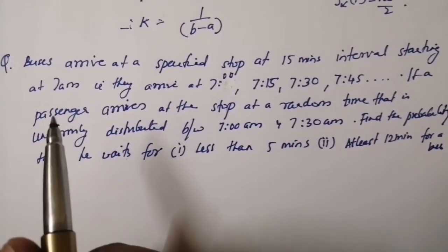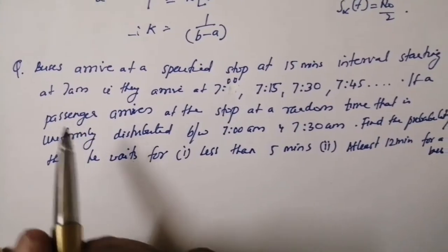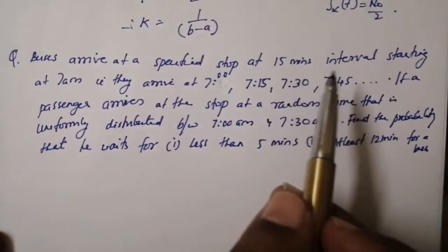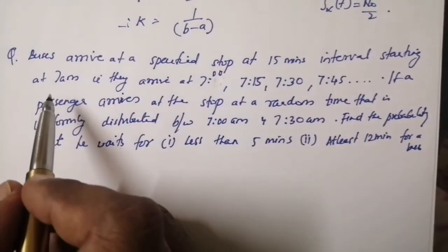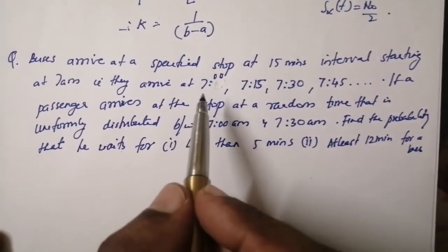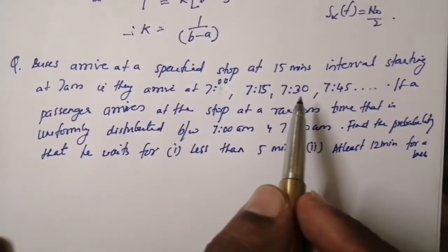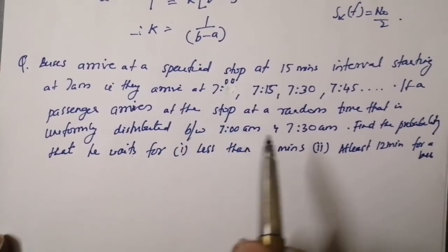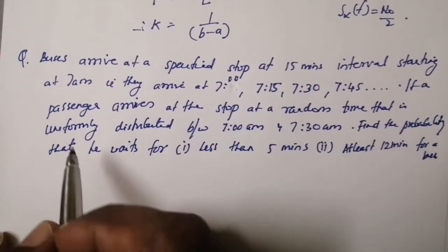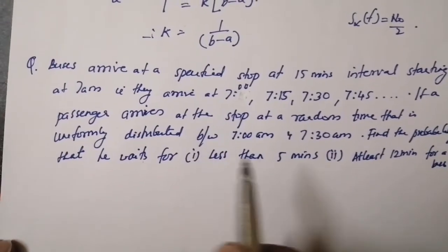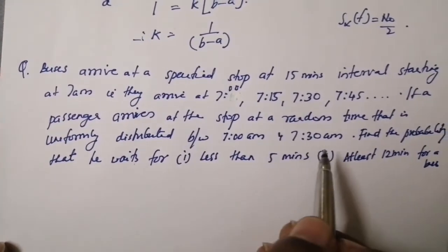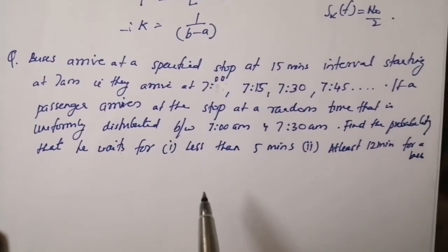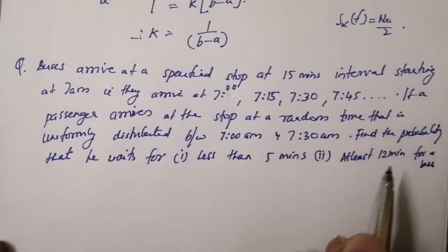To understand uniform distribution, we will do a problem. Buses arrive at a specified stop at 15-minute intervals starting at 7 am — that is, they arrive at 7:00, 7:15, 7:30, 7:45, and so on. A passenger arrives at the stop at a random time uniformly distributed between 7:00 am and 7:30 am. Find the probability that he waits less than 5 minutes, and at least 12 minutes, for a bus.